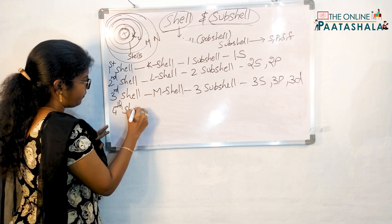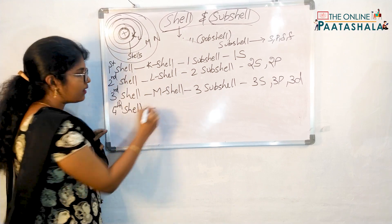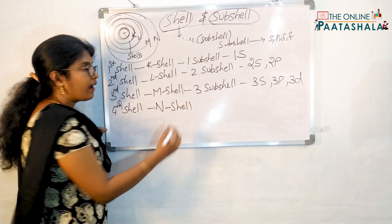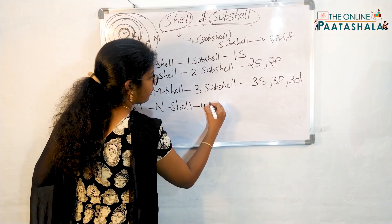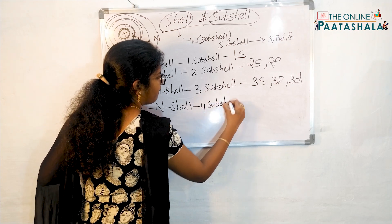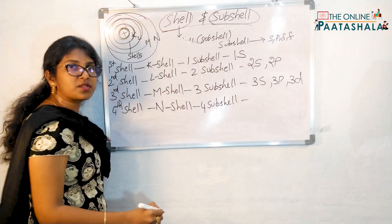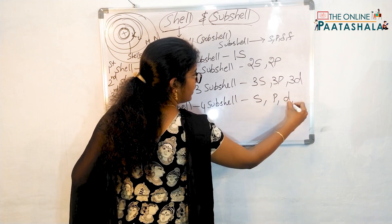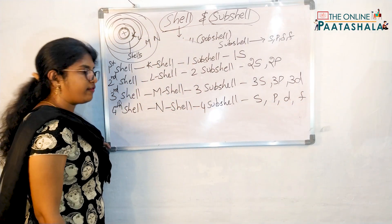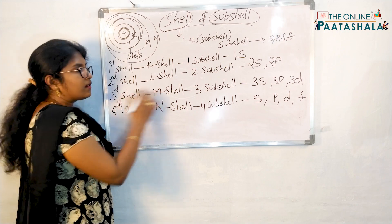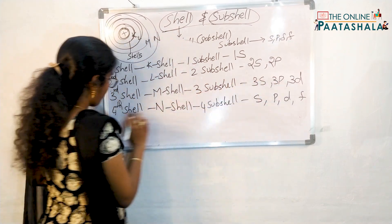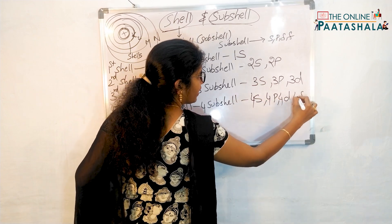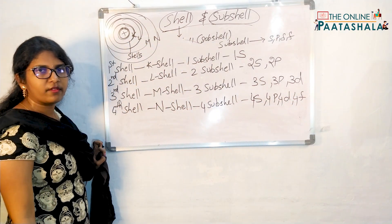Next, the fourth shell — that is the N shell. Four subshells will be present. What are those? S, P, D, and F. So the fourth shell has 4S, 4P, 4D, and 4F.